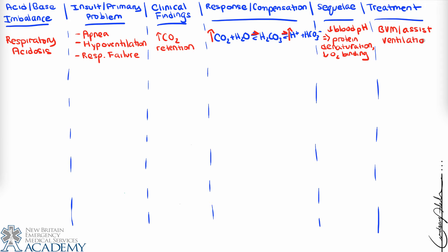Treatment for respiratory acidosis is assisting ventilations with a bag valve mask and/or providing positive pressure ventilation. When we correct the primary problem of improving ventilation, we blow off the excess CO2. Reducing CO2 in the alveoli and consequently in the pulmonary capillaries allows us to reverse the effects on the carbonic acid bicarbonate buffer system, converting the extra hydrogen ions back to CO2 and returning to baseline.